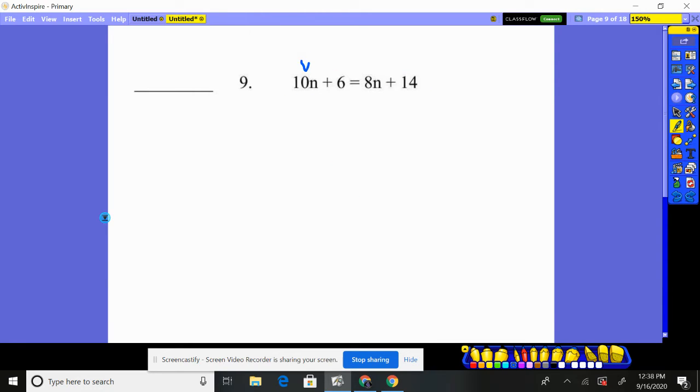Number 9, variable, number, equals variable, number. Well, let's move the variable, I'm going to move the 8n. So that variable is going to move over there, and then that number will move over there. So I'm going to move the 8n over by subtracting 8n from both sides of the equation. I get 2n plus 6 equals 14.